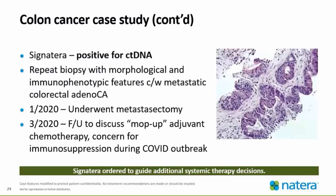The Signatera result came back positive for ctDNA. This really encouraged the provider and the patient to track down where this tumor was coming from. A repeat biopsy was warranted and did find morphological and immunophenotypic features consistent with metastatic colorectal adenocarcinoma. The patient underwent surgery, had that mass removed, and came back in March — right around when the pandemic was breaking out. It was discussed whether or not to do mop-up adjuvant chemotherapy.